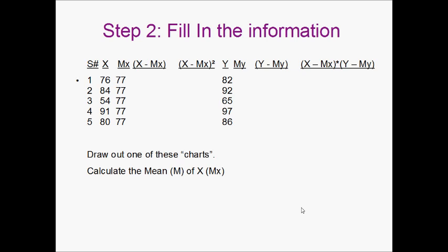First thing we've got to calculate is the mean of X. So what we're going to have to do is we're going to have to add up all these numbers under X. So 76 plus 84 plus 54 plus 91 plus 80 divided by 5. This is going to give us 77 and we're going to write that next to each of these numbers.